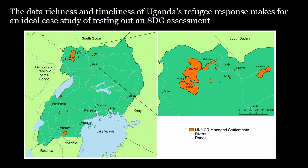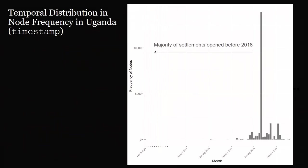In Uganda, there's a lot of data available largely due to HOT Uganda, so we've focused our preliminary attention on rolling out this SDG assessment for refugee settlements there. Looking at the temporal distribution of node frequency in Uganda — when nodes were uploaded to OSM — most nodes were uploaded in May 2018, probably reflecting a mapping campaign at that time. However, we know most settlements were open before 2018, in 2015, 2016, and 2017. This highlights the lag that can result with OSM data in SDG monitoring.